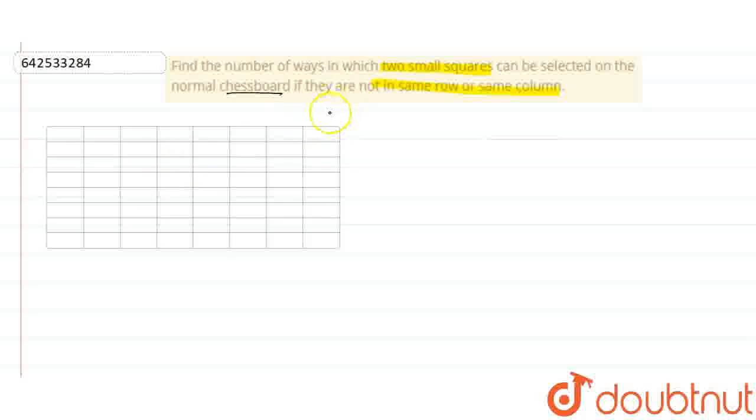So what the question is asking us to do is to find out two small squares from 64 and the squares are not in the same row or not in the same column.